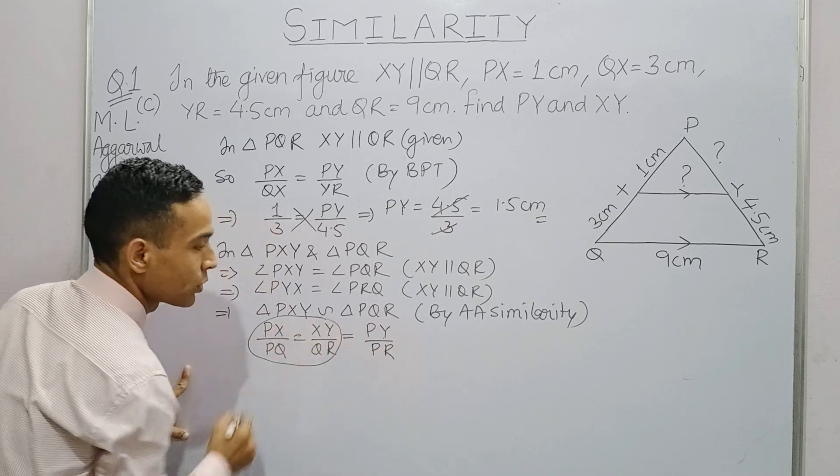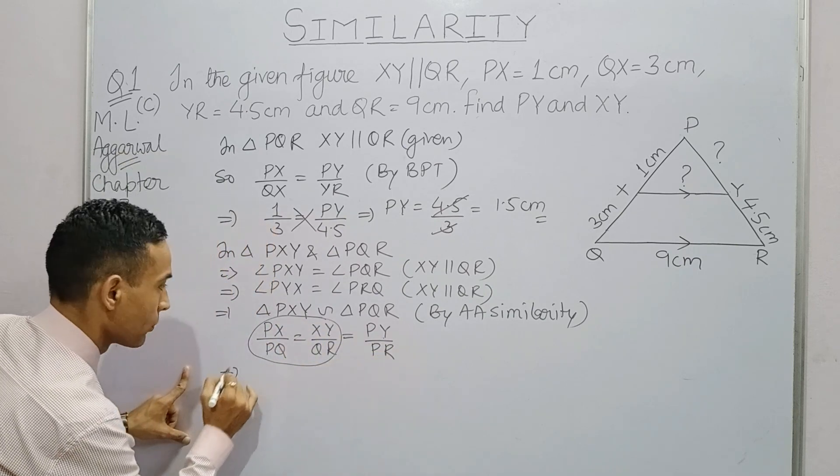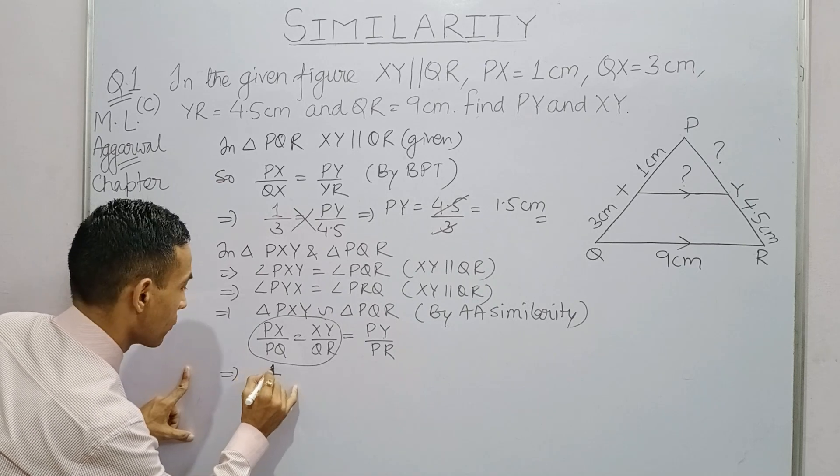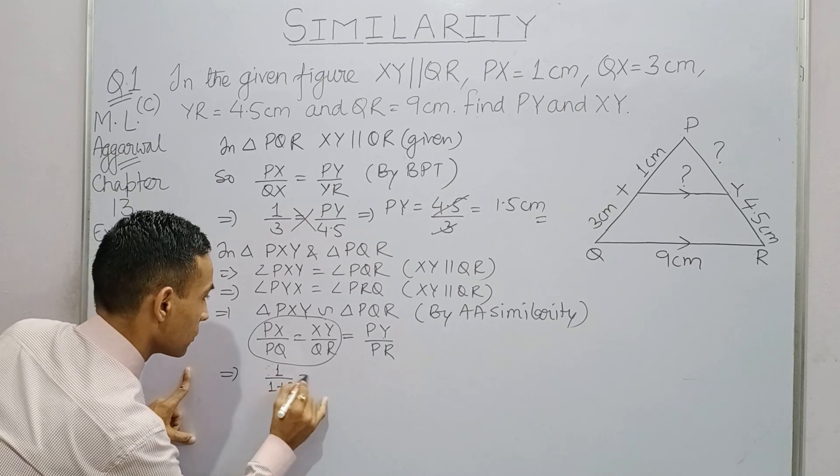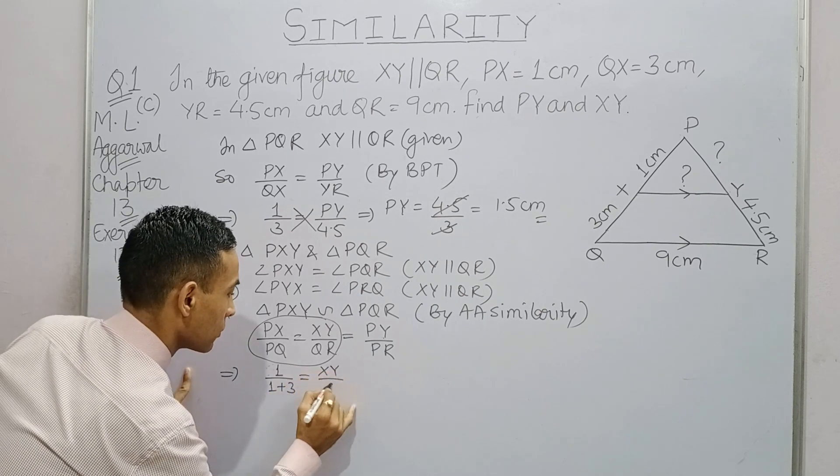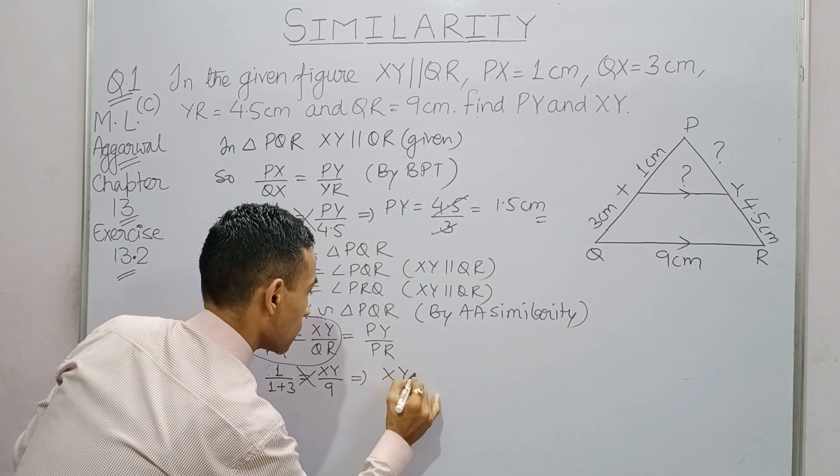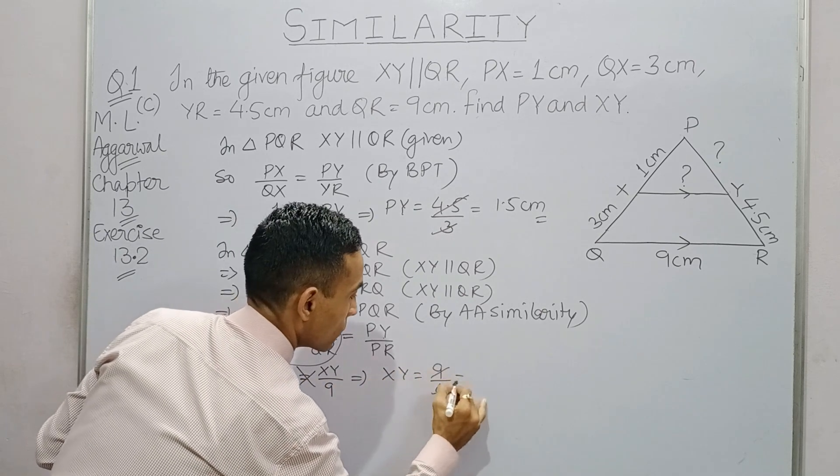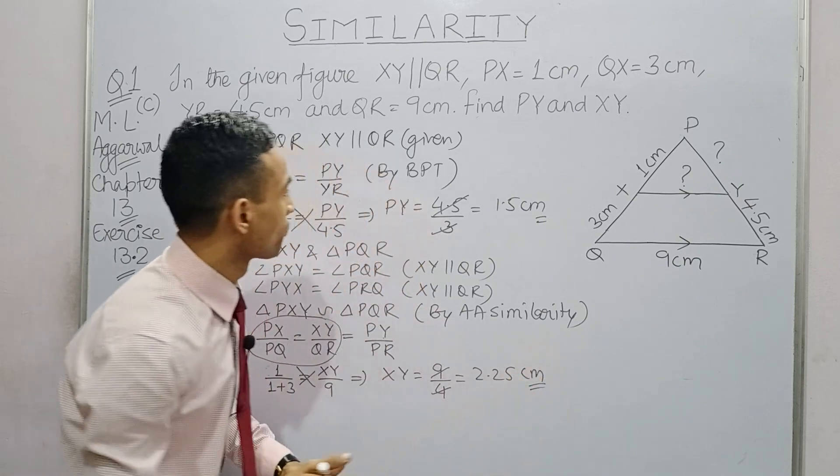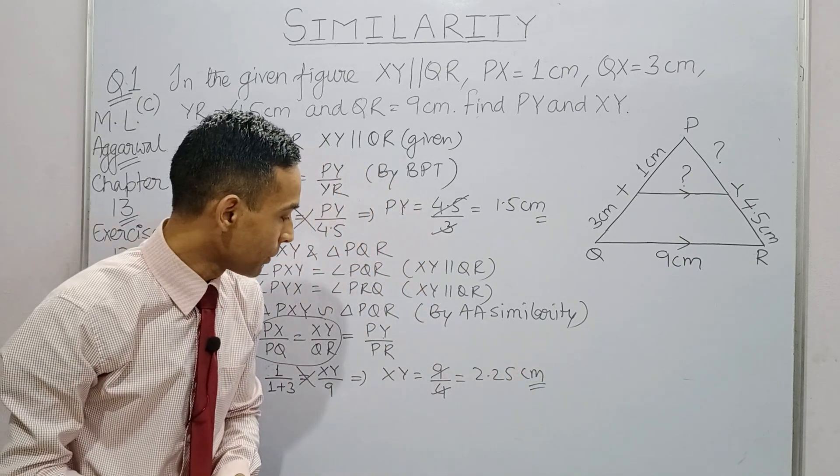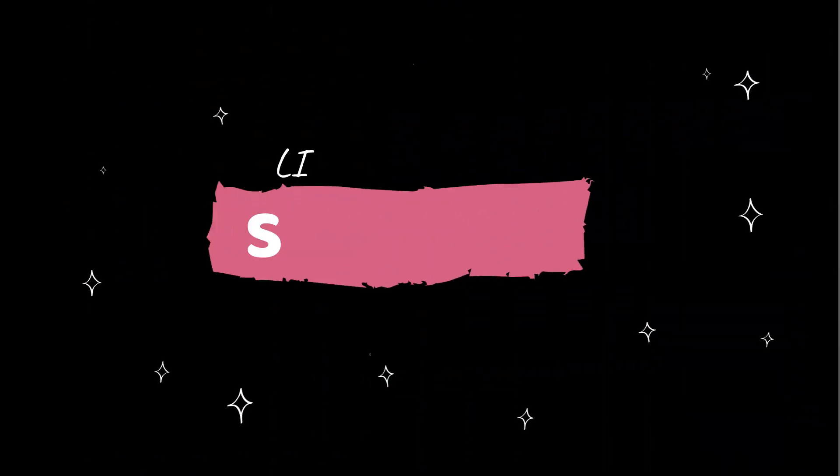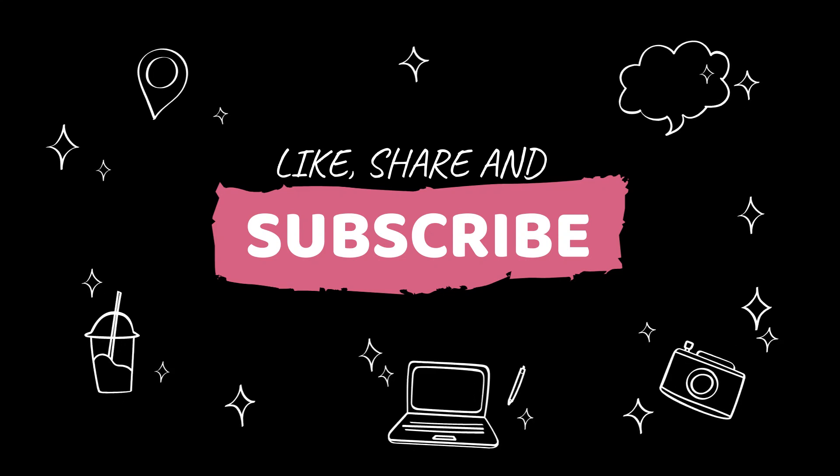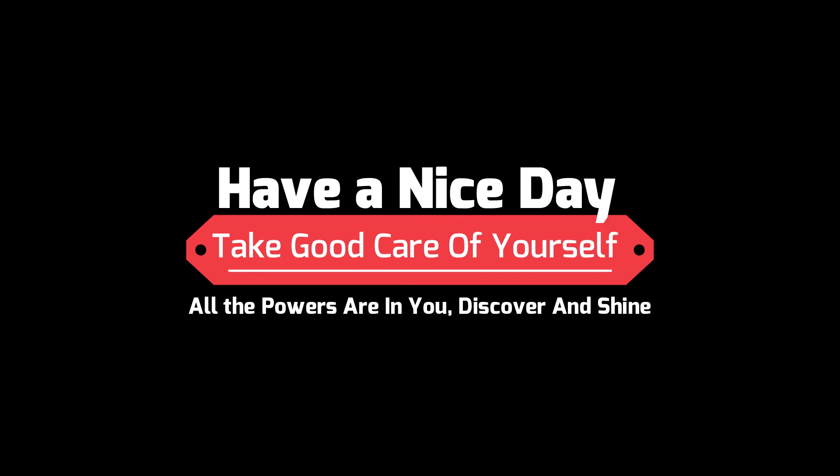Now we will write their corresponding sides in proportion. Choose these two and substitute the values. So PY is 1.5 cm and XY is coming 2.25 cm.